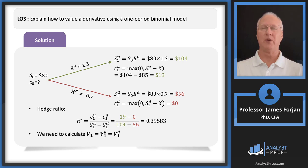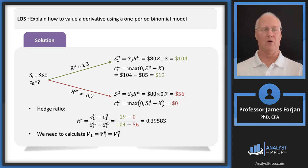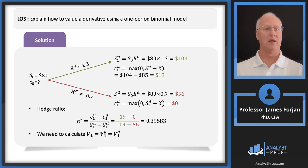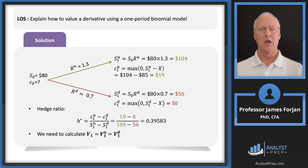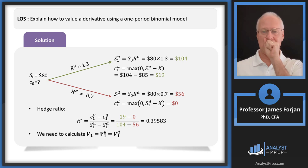Let's go ahead and do our binomial work. Starting from the current stock price of 80, the gross return on the upside is 1.3, so 1.3 times 80 gives us 104 in the upper right. For the downside, the gross return is 0.7, so 0.7 times 80 gives us 56. So the stock price today is 80, goes up to 104 or down to 56.